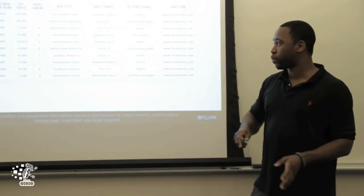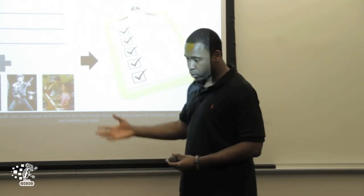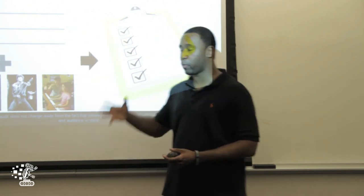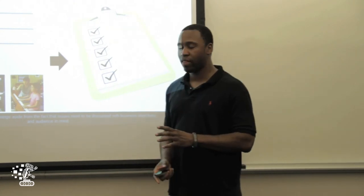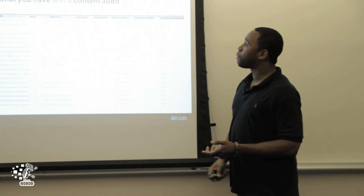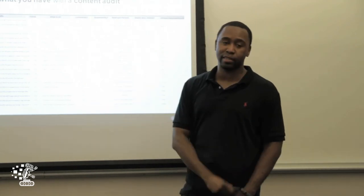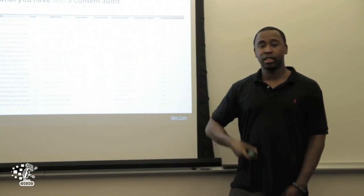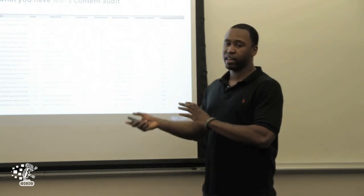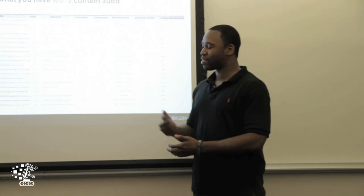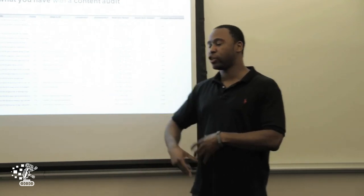At this point we also do the site audit — we understand who the people are, we understand the goals, and now we make sure the site itself is aligning with that and that everything's tight from a technical standpoint. We also do a content audit, which is what Devon does: going through every piece of content and deciding whether it's share-worthy, link-worthy, how we can improve it, and who it's targeting. In some cases we find that sites are not targeting the people we've identified at all, which is a huge overhaul.